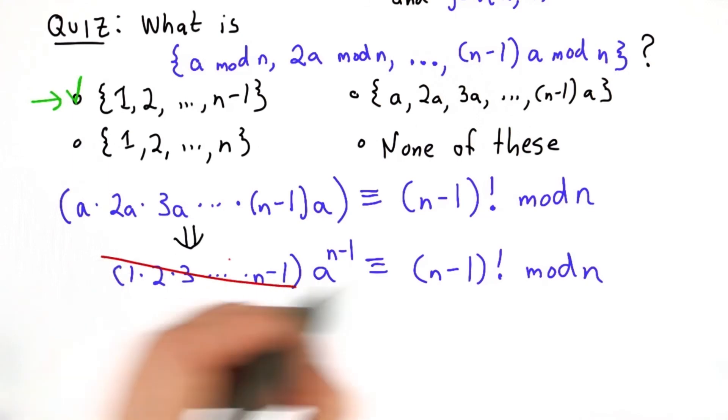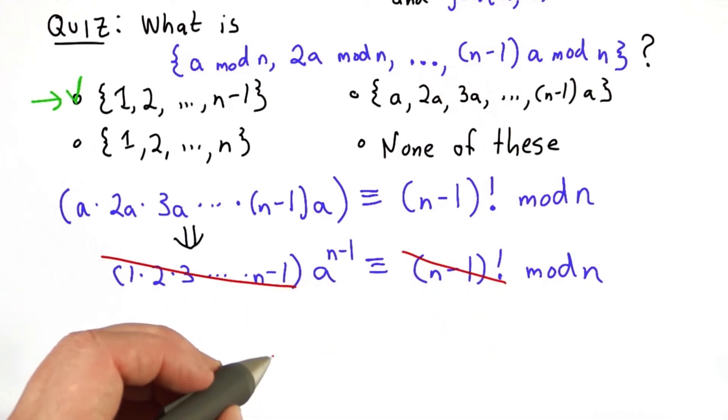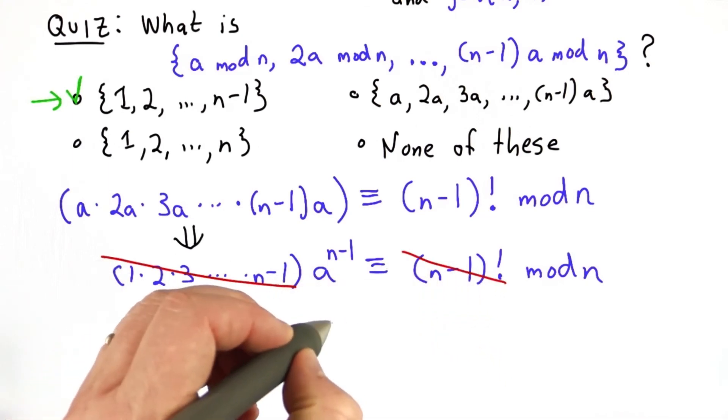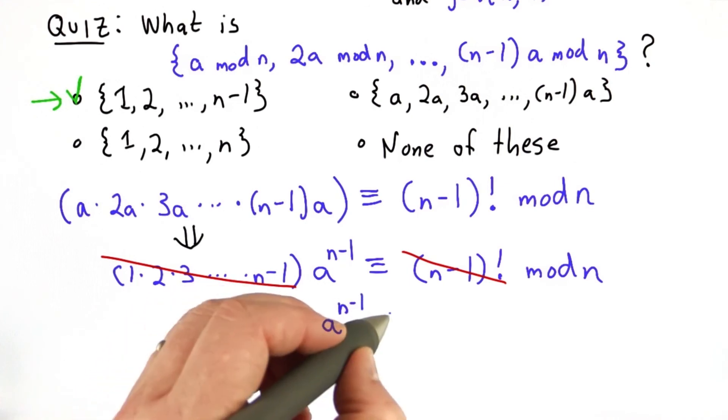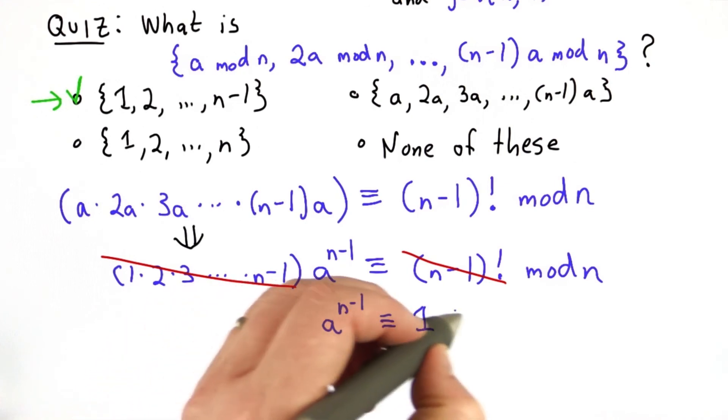So now we can remove these terms, and we're left with exactly what we wanted, that a to the n minus 1 is congruent to 1 mod n.